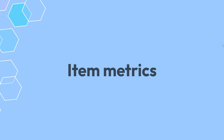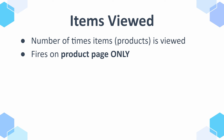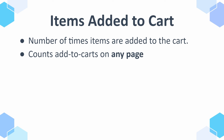Next, let's look at item metrics — items just mean products in GA4. First we have items viewed, which is the number of times an item is viewed on the product page only. So if you have the product on your homepage, it would not be tracked as part of this event. Then we have items added to cart, which counts how many times a specific product has been added to cart.